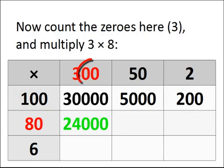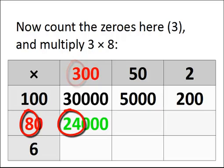Let's count the zeros here. There's two in the 300, one in the 80, gives you three zeros, and three times eight is 24. Gives you 24, followed by three zeros, 24,000.